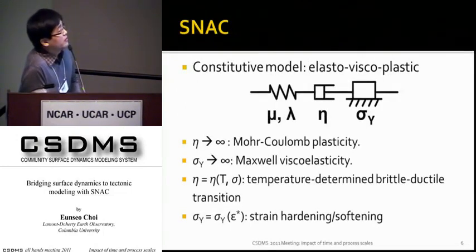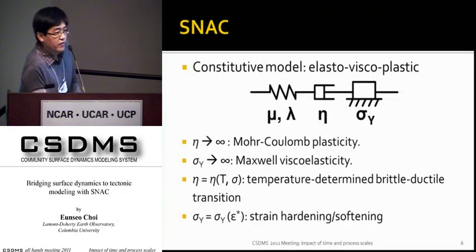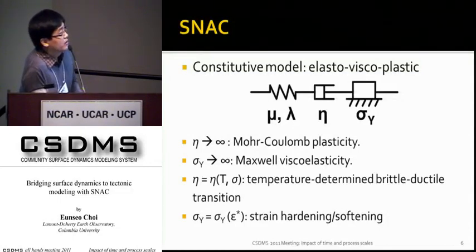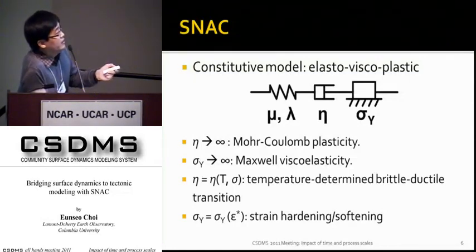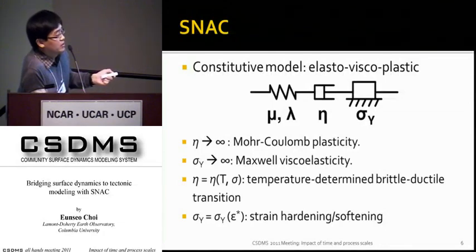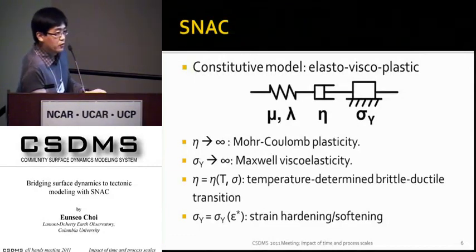The constitutive model employed in SNAC is elastoviscoplastic — conceptually a linear combination of elastic, viscous, and plastic units. This model is very flexible. For instance, if we have very high viscosity, the material becomes essentially plastic, for example Mohr-Coulomb. And if the yield stress is set extremely high, the whole material becomes essentially Maxwell viscoelastic. So if we have temperature-dependent viscosity, the brittle-ductile transition will be naturally determined by a given temperature field. And if we have yield stress as a function of a certain internal variable, we can have strain hardening or softening, which is required for strain localization phenomena.